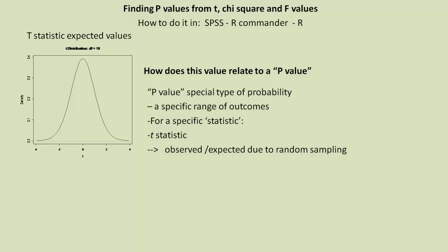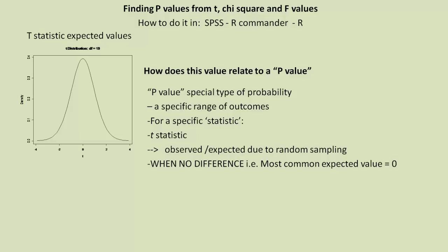The t-statistic is a ratio of observed values to those expected due to random sampling. If there was no observed difference and it was all just random sampling, we'd get an expected value of zero. Because of that, a p-value is a conditional probability — it's conditional upon the parameter value being zero.